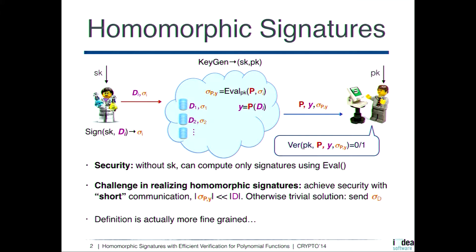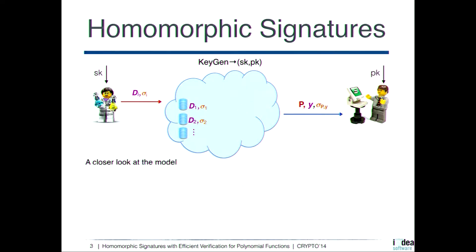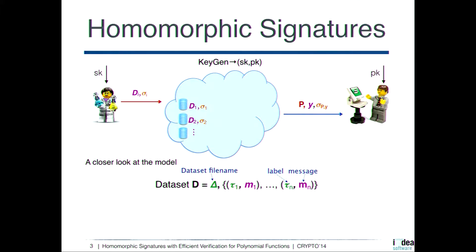To better understand this model, let me go into more detail. A data set actually consists of some data set file name — a binary string used to refer to the data set — and a set of pairs consisting of labels and messages. The messages are the values you want to sign and compute over, and the labels are meta-information attached to each message. For example, a label can simply be the position of the message in the data set.